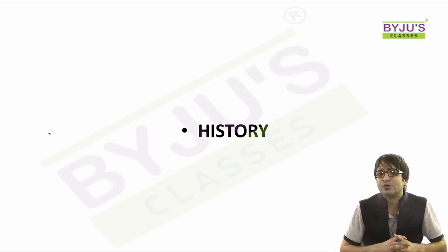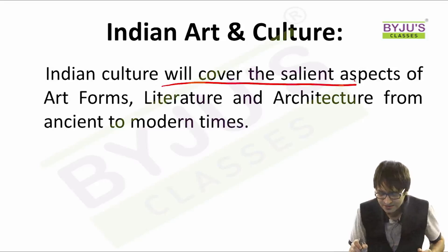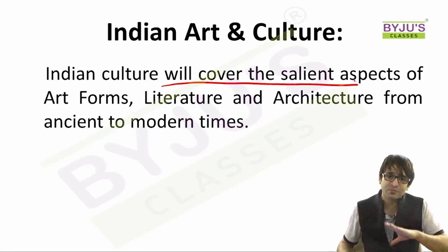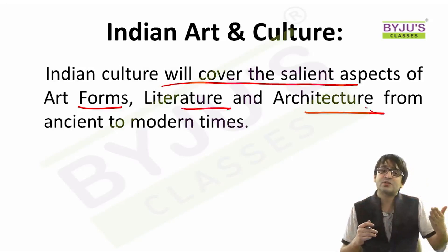Let us first look at Indian art and culture. The syllabus tells us that Indian art and culture will cover the salient aspects of art forms, literature, and architecture from ancient to modern times. So the focus is on three areas: art forms, literature, and architecture, right from ancient India to the present times. This is where your focus has to be.